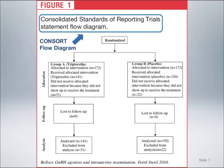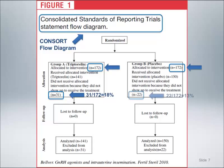The flow diagram for this study only includes information on three of the four stages. There is no information in the diagram, or elsewhere in the manuscript, describing the enrollment process — which would include how many individuals were assessed for eligibility, how many were excluded, and reasons for exclusion such as being ineligible or declining to participate. We do see that 172 individuals were randomized to each group. Additionally, 31 out of 172 (18%) of individuals in the treatment group and 22 out of 172 (13%) in the placebo group did not receive their assigned interventions because they failed to show up for treatment. None of those who received treatment were lost to follow-up. As a result, 141 individuals in the treatment group and 150 in the placebo group were included in the final data analysis.